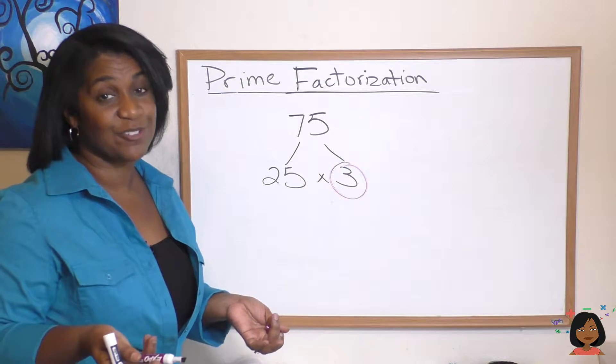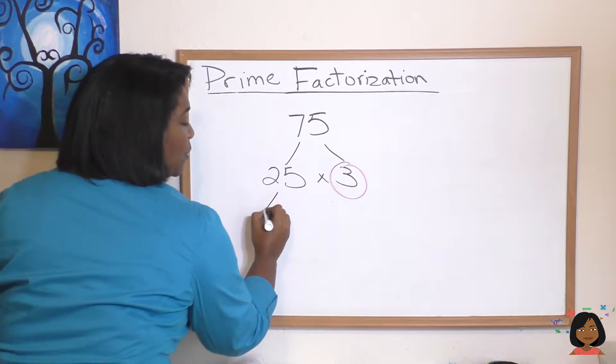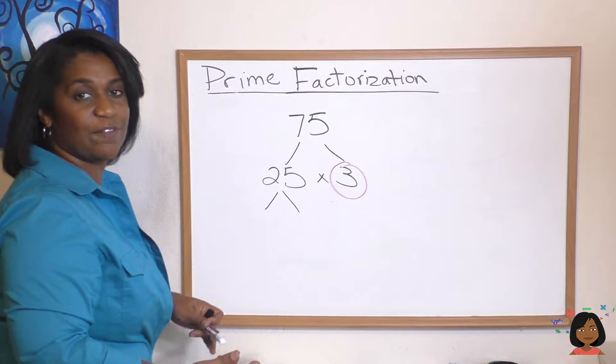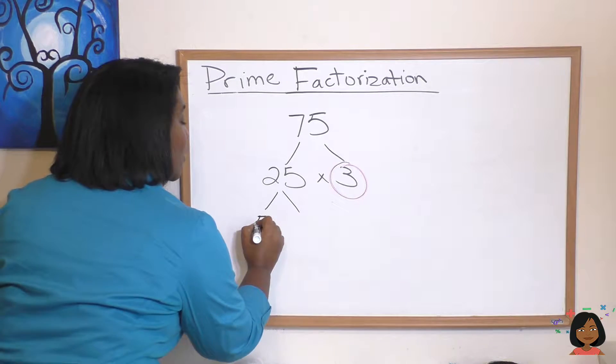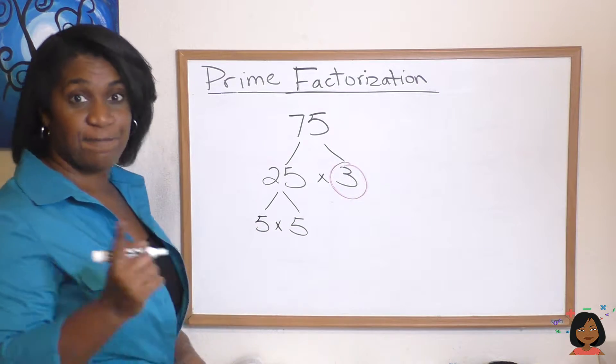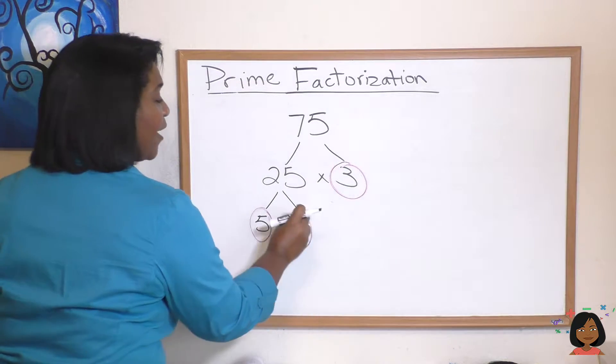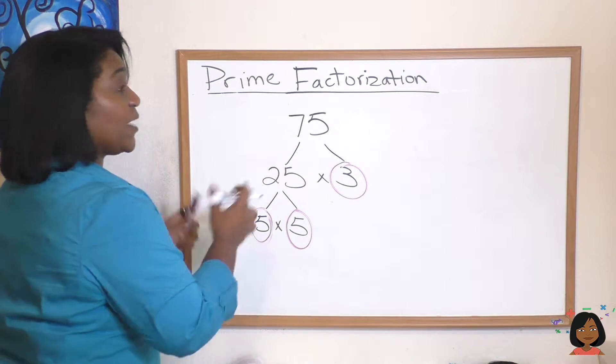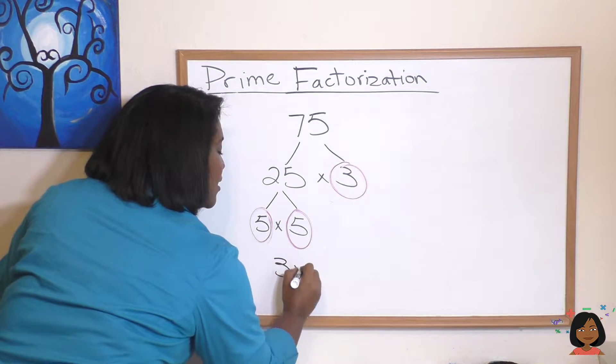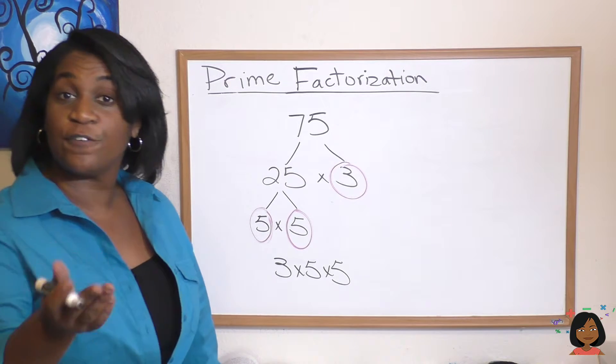25 has factors other than 1 and 25. So let's factor the 25 and I just put these two little branches on it. That's why it's called a factor tree. What times what is 25? 5 times 5 is 25. And now I look at my numbers again. Are these prime numbers? Yep. 5 is a prime number. That means I have reached the end of the road. 5 times 5 times 3. I'm going to start with the small number. 3 times 5 times 5 is the prime factorization for 75.